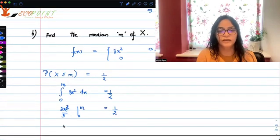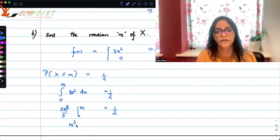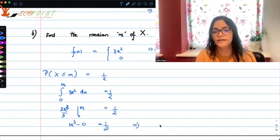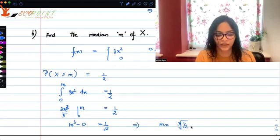Which means what we have here is 3, 3 cancels and you have m cube minus 0 equals to half. That means m should be cube root of half.